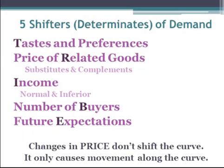There are five determinants of demand. The first is taste and preferences, how much you like a good. Second is the price of related goods. Are they substitutes where if the price of one goes up, you'll buy less of the other? Or complements where if you buy one, you're going to buy more of the other. So if the price of one goes up, the demand for the other one will go down as well.